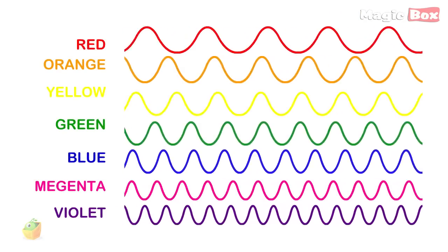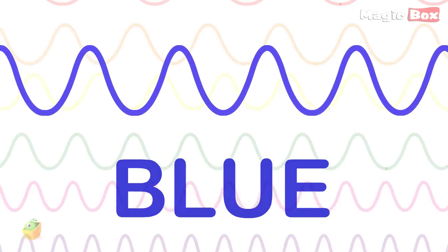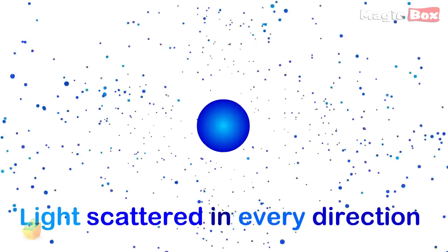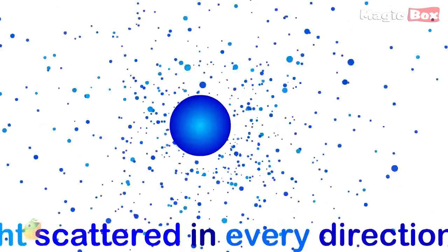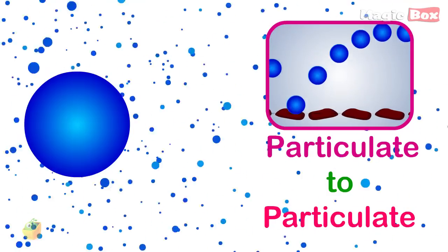However, because blue light has a wavelength that is the same size as the particles in the air, this light is scattered in every direction. This blue light bounces from particle to particle until it eventually reaches your eyes.